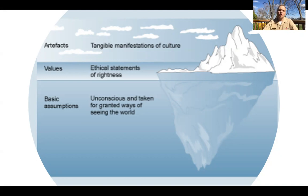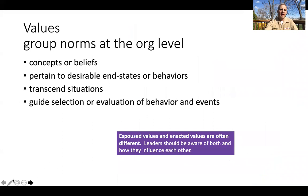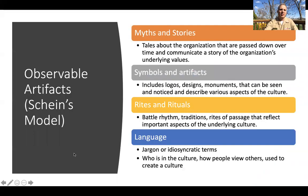Now that you've gotten an overview of the different levels in Schein's model of culture — the idea of artifacts, values, and basic assumptions — let's dive a little bit deeper into what each of these mean. So first, let's talk about observable artifacts from Schein's model.